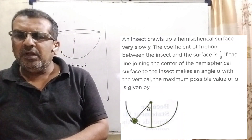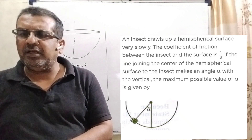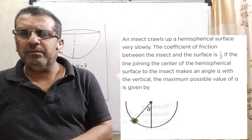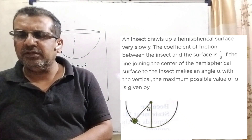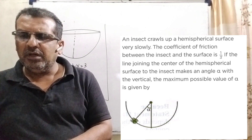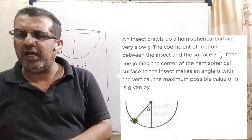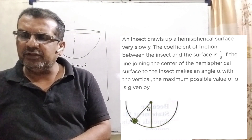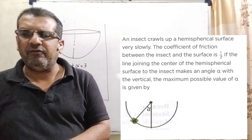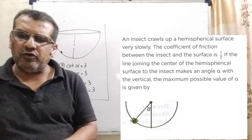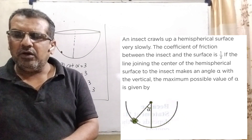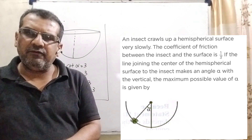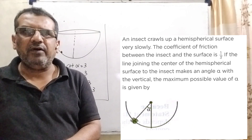Now here is the question. An insect crawls up a hemispherical surface very slowly, as shown in the figure. The coefficient of friction between the surface and the insect is 1/3. If the line joining the center of the hemispherical surface to the insect makes an angle alpha with the vertical, the maximum possible value of alpha is given. We have four options: Option A — cot alpha equals 3; Option B — tan alpha equals 3; Option C — sec alpha equals 3; Option D — cosec alpha equals 3.